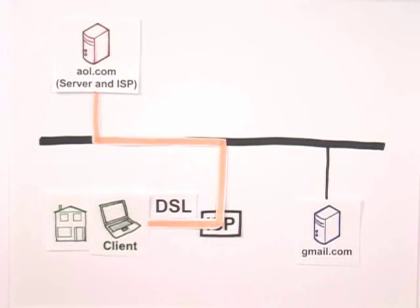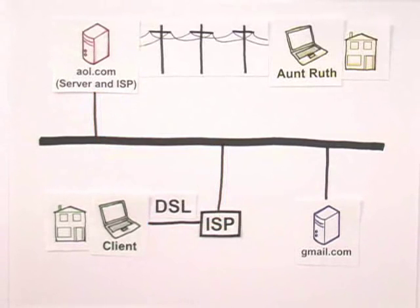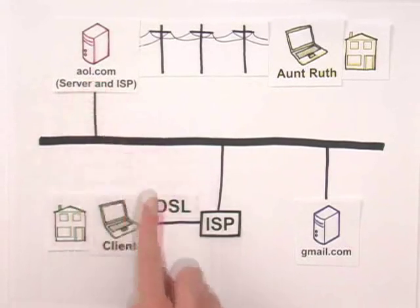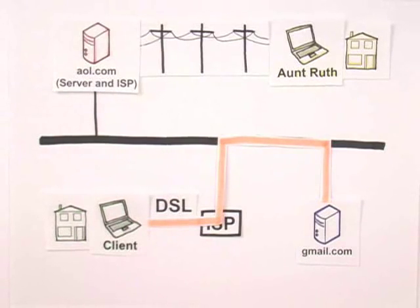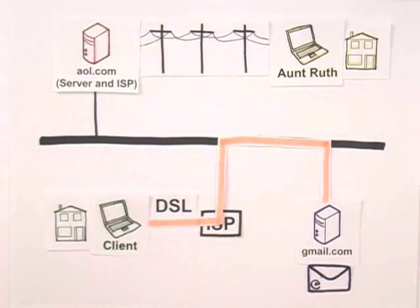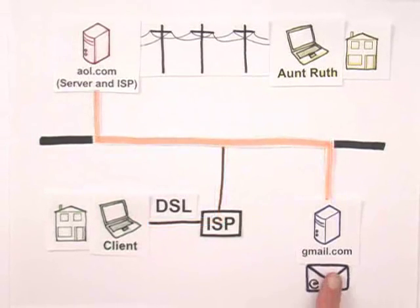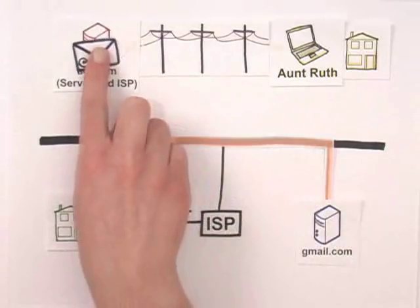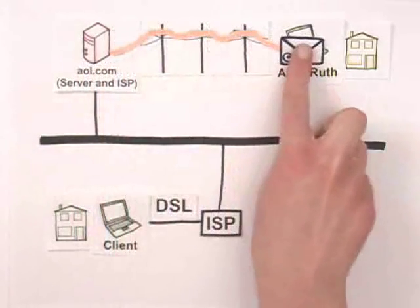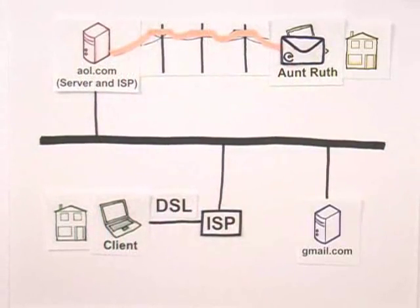My computer connects with AOL.com, and I can look at its web pages. Now, let's say that I want to send an email to Aunt Ruth. Aunt Ruth has AOL dial-up from home, and I've got a Gmail account. I log onto gmail.com and compose a message to Aunt Ruth's email address, auntruth.aol.com. Once I click send, gmail.com sends the email to AOL.com. The next day, Aunt Ruth dials into AOL's servers and retrieves the email.